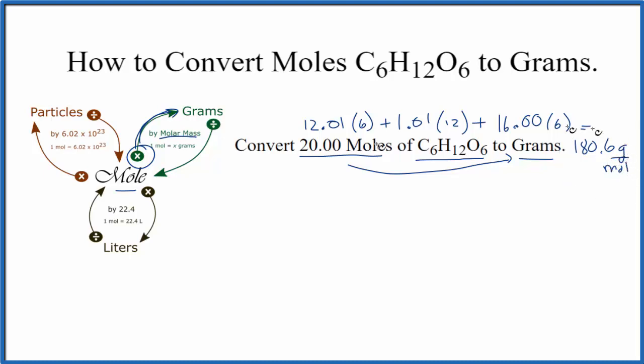Now we have the molar mass. We just multiply the number of moles we're given by the molar mass and we'll get grams. We're given 20.00 moles of C6H12O6. We're going to multiply that by the molar mass, that's our conversion factor: 180.6 grams per mole.